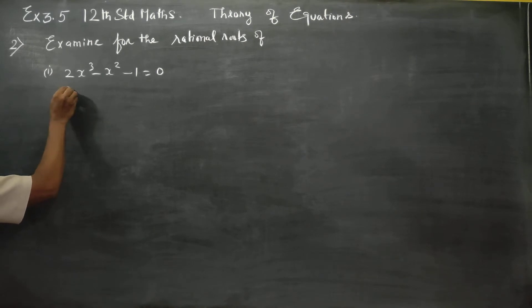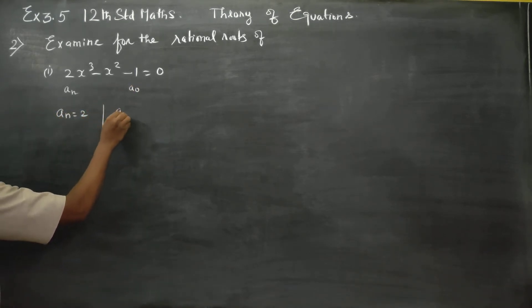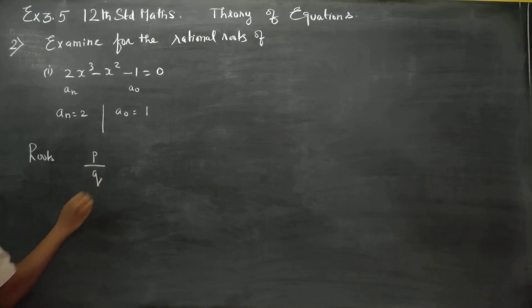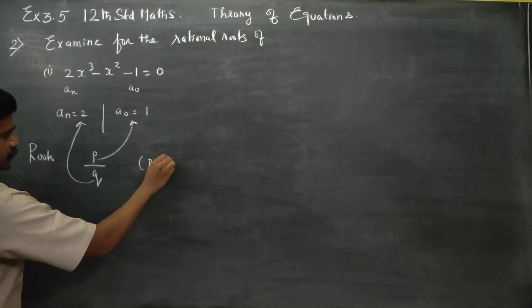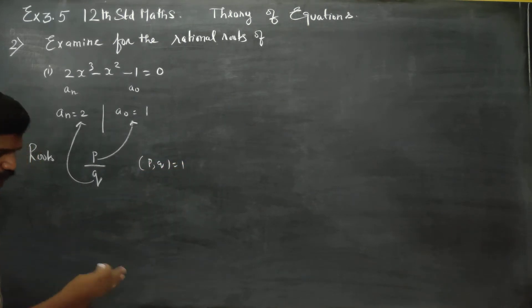First of all, this is my a_n and this is my a_0. Now, a_n is equal to 2, and a_0 is equal to 1. In roots, the style is P by Q. P is the factors of a_0 and Q is the factors of a_n, such that GCD is 1, numerator and denominator cancel out.